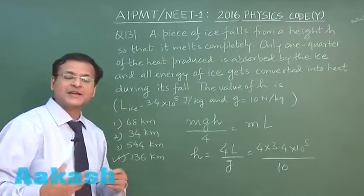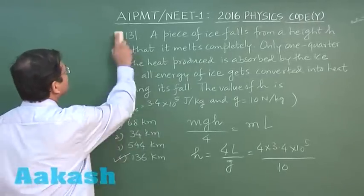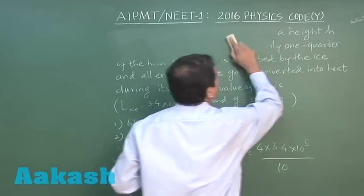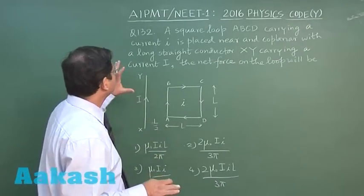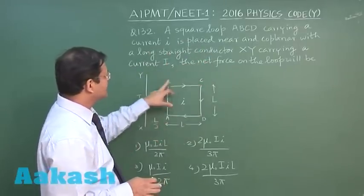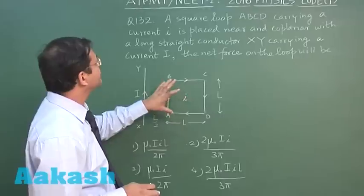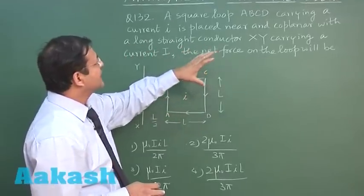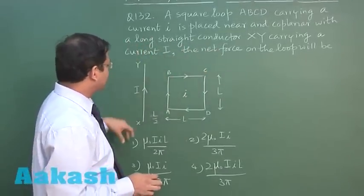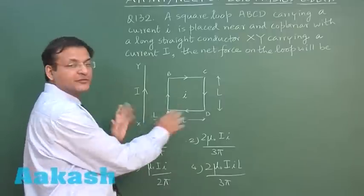Here in question 132, you have been given a square loop ABCD carrying a current i in clockwise direction, placed near and coplanar with a long straight conductor XY carrying a current capital I. There will be force of interaction between them.